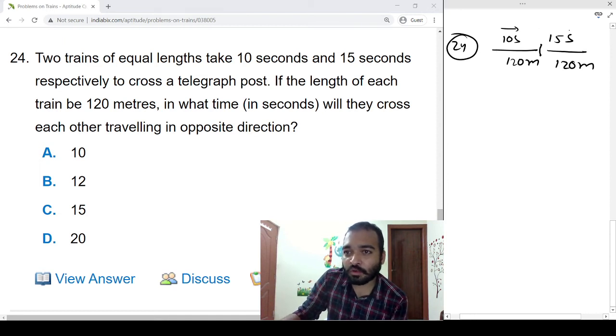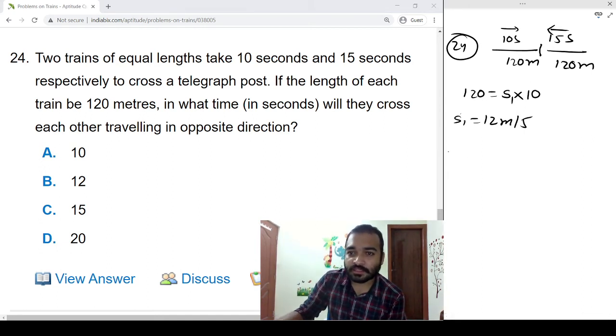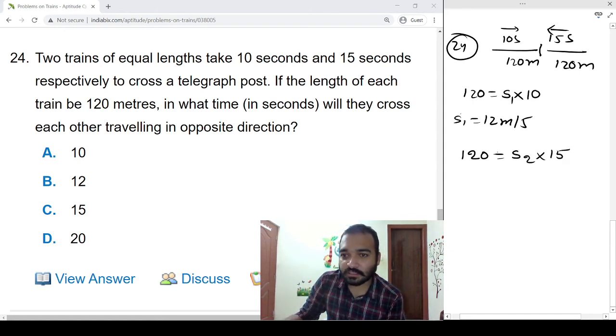First case: trains are crossing one pole from opposite direction. Distance is 120 meters, speed into time. So s1 is the speed of the first train. S1 is equal to 12 meter per second.